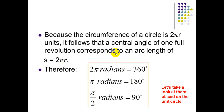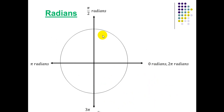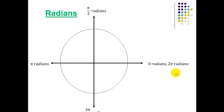Key radian-degree equivalences: 0 radians equals 0°, π/2 radians equals 90°, π radians equals 180°, 3π/2 radians equals 270°, and 2π radians equals 360°.